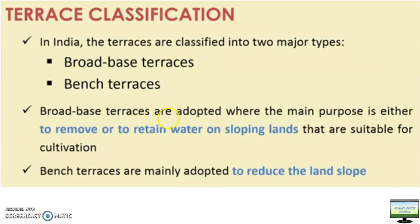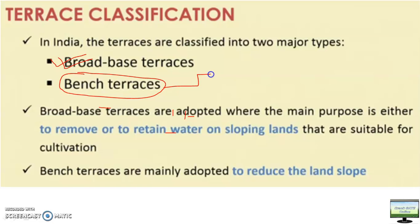Terracing is also of two types, like bunding had graded bund and simple bund. So here terracing is also of two types: one is the broad based terrace and one is the bench terrace. When you want to store or dispose of excess water, it is a broad based terrace. When you only want to reduce the length of slope, it is a bench terrace. Broad based terraces are also two types: level and graded. For graded, you dispose of excess water; for level, you store and conserve the water.